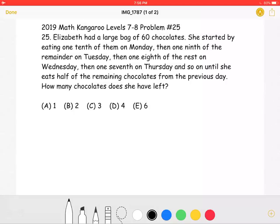Elizabeth had a large bag of 60 chocolates. She started by eating one-tenth of them on Monday, then one-ninth of the remainder on Tuesday, then one-eighth of the rest on Wednesday, then one-seventh on Thursday, and so on until she eats half of the remaining chocolates from the previous day.